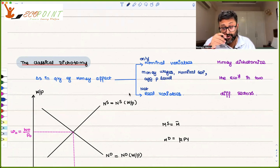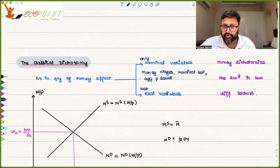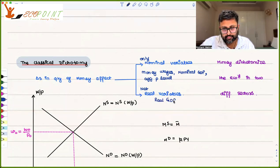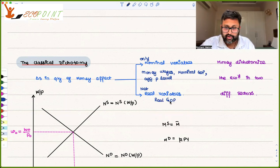Changes in the quantity of money will not affect the real variables. Real variables are, for example, real GDP, level of employment, and real wage.